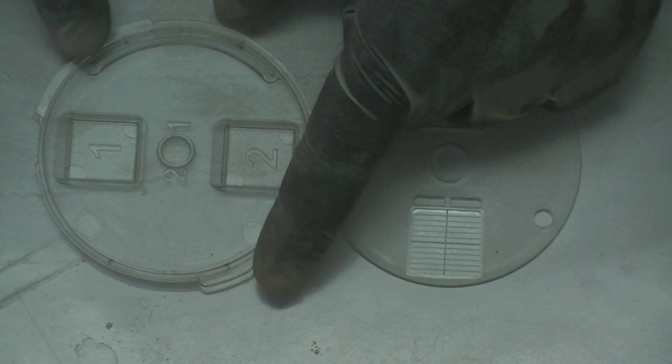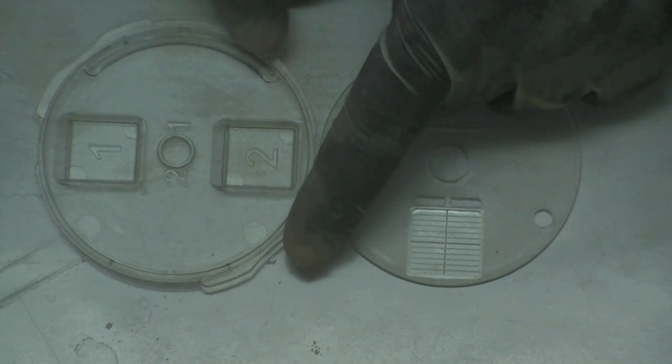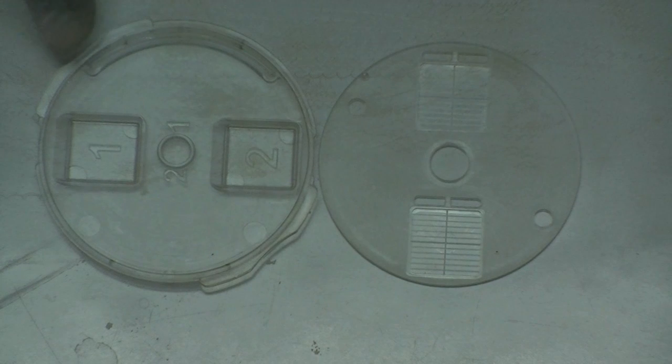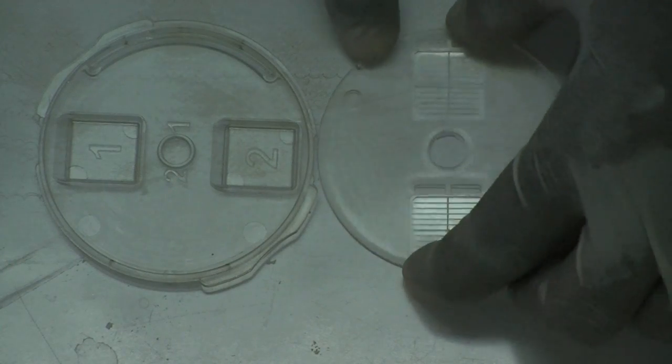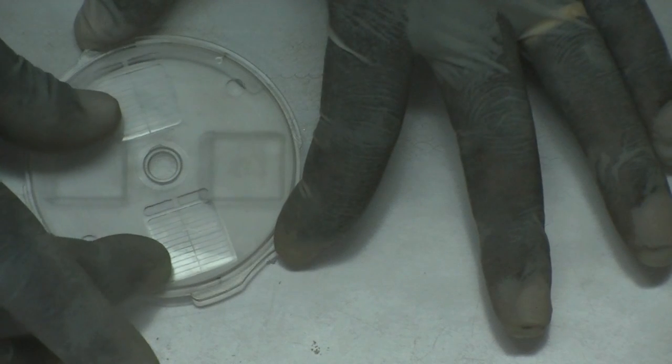We will first assemble the base and the disc. At the top of the base you find a groove. At the bottom of the disc you see a protrusion. Put the disc on the base so that the protrusion fits into the groove. You should now be able to turn the disc.